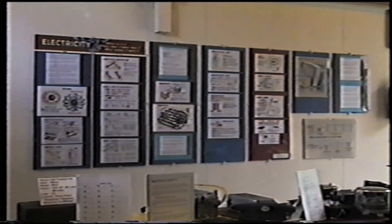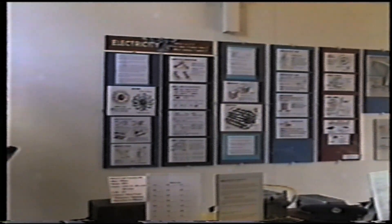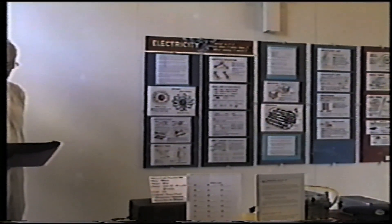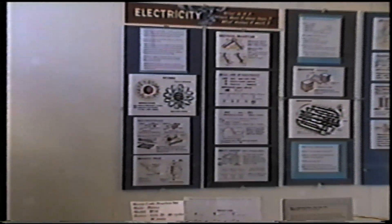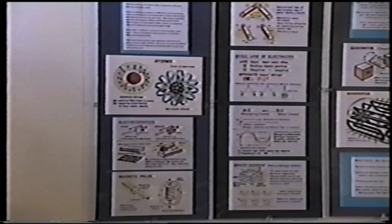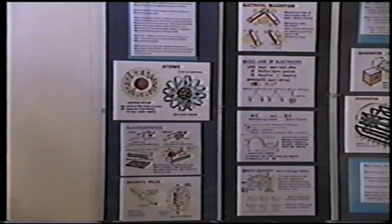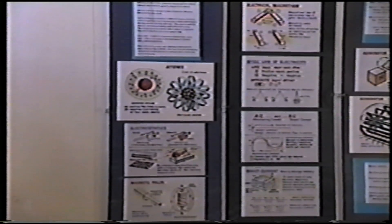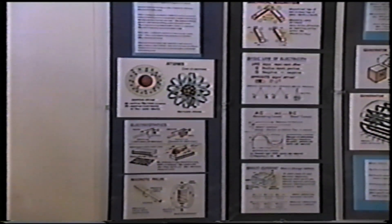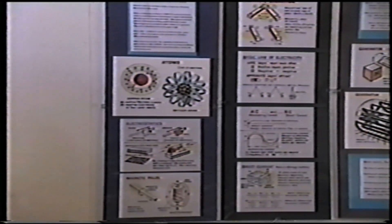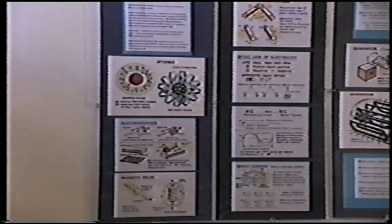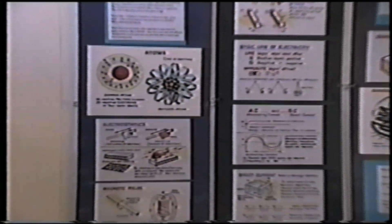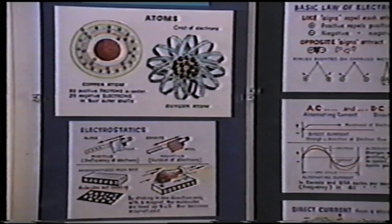The first panel gives an explanation for the basic atomic structure describing an electric current due to the movement of electrons. A flow of 6.28 billion electrons will produce a current of one ampere.